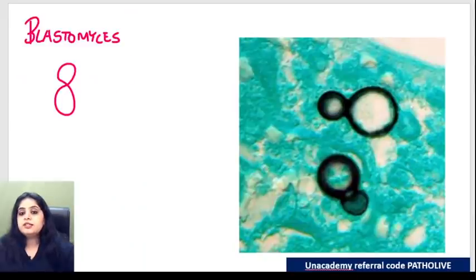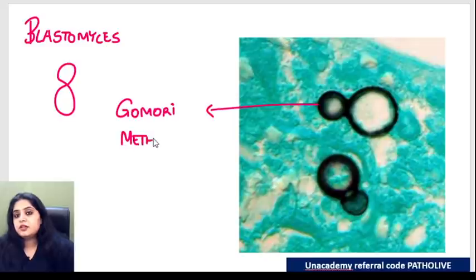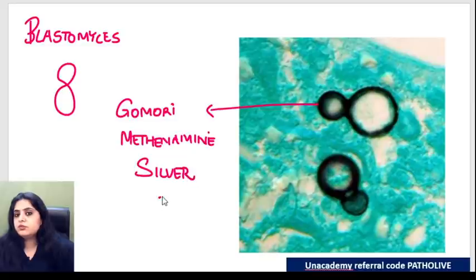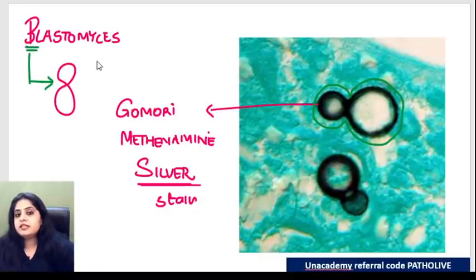The next pneumonia can be caused by Blastomyces. When dealing with black color stains in fungi, the stain is Gomory methanamine silver stain (GMS). Whenever we use the word silver, black color has to come. The shape seen for Blastomyces is a figure-of-8. B for Blastomyces, B looks like an 8 - this shows you figure-of-8 appearance. That is an important exam question.